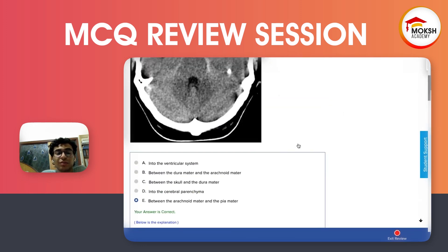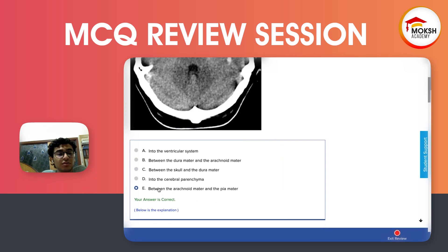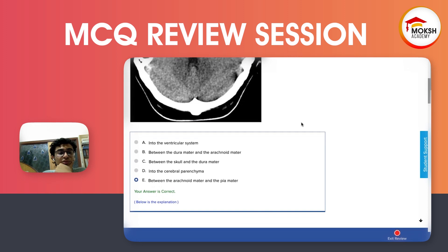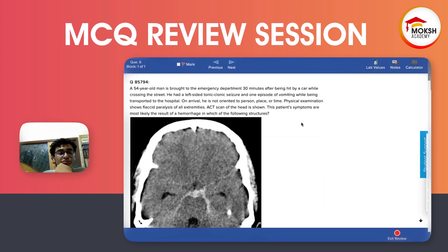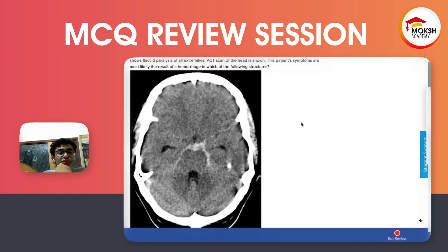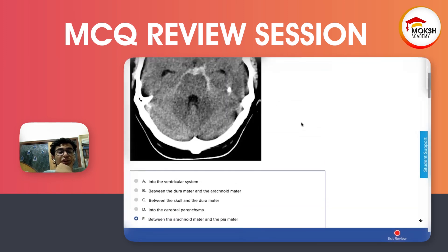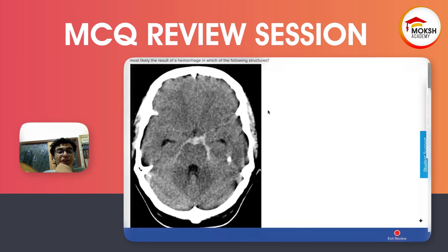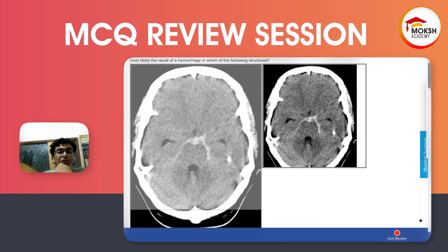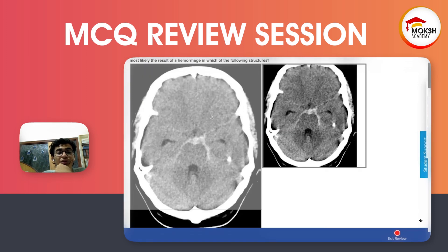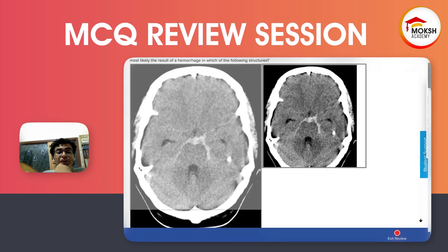So where is the subarachnoid space? It's between the arachnoid and the pia mater. It was quite obvious from this one — it cannot be anywhere else. If it were an ischemic stroke, there would be hypointensity somewhere in the parenchyma.